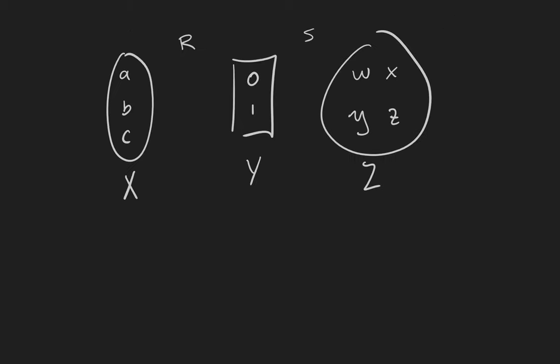One way to calculate RS is to draw a diagram of all of the involved sets. So here we picture the sets X, Y, and Z. The relation R relates A and B to 0, and B and C to 1.